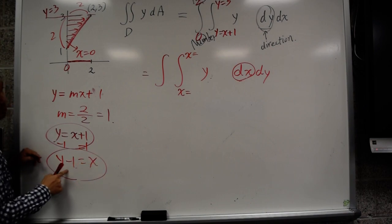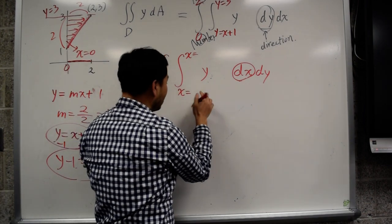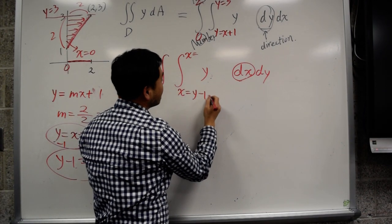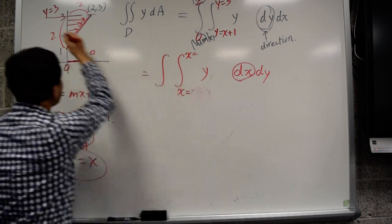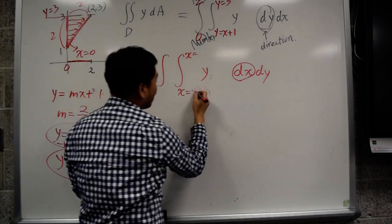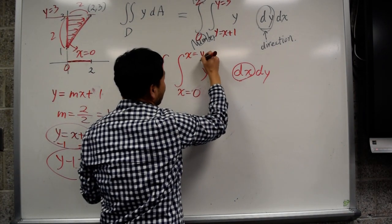And this is the equation you have to put in here because you're forced to say x equal to. So here it should be y minus 1, and here it should be, oh, sorry, sorry. It's going this way, so you start from here, which is x equal to 0, and you end up at this line, which is y minus 1.